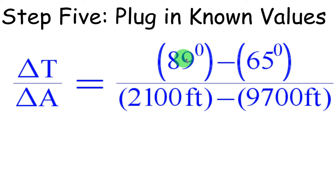So our T2 was 89, hotter. Our T1 was 65, cooler. A2, 2100, lower. A1, 9,700, higher.